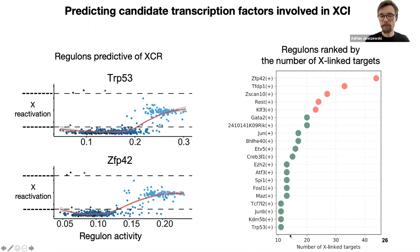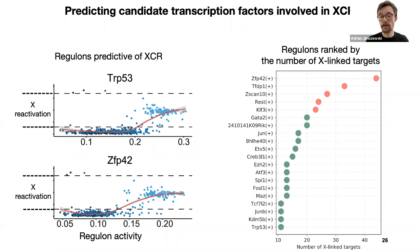This is pointing to ZFP42. This is very interesting because ZFP42 has already been previously shown to repress X chromosome inactivation by indirectly repressing Xist, and it has been shown to have co-evolved with Xist. But the role of ZFP42 in X reactivation is still unknown. This data suggests that ZFP42 could be a factor that couples the evolution of the pluripotency regulatory network with X chromosome reactivation. Currently, we are testing the role of ZFP42 and other candidate factors in X reactivation.